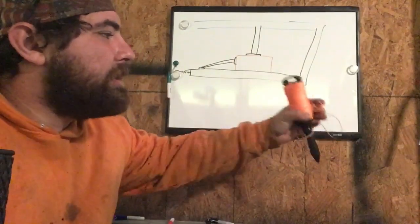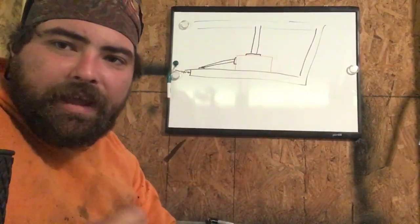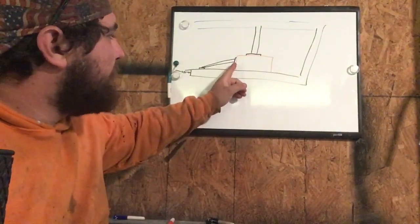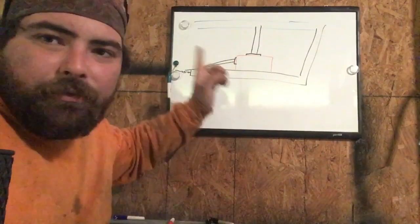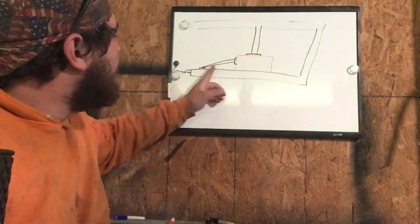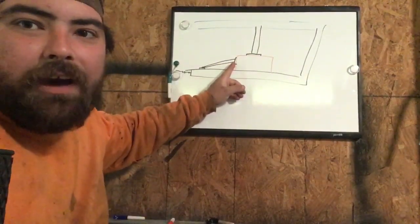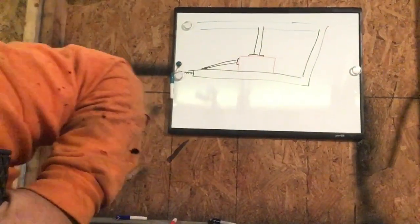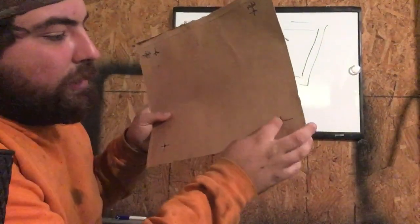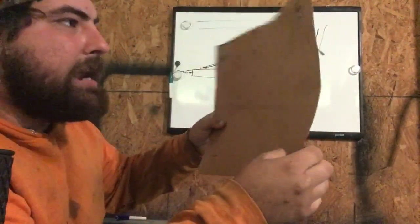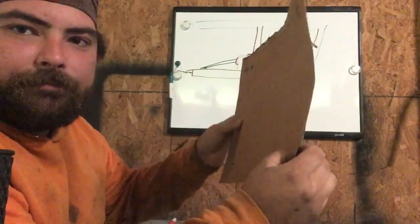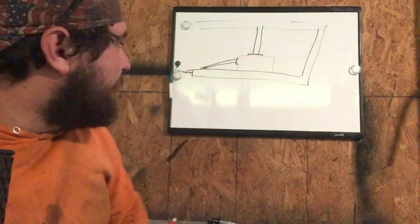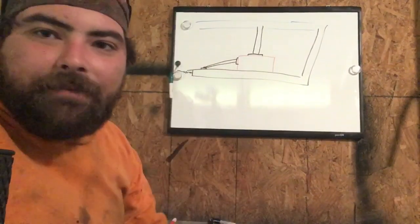So what we do is we tie the string to the bottom inside corner anchor bolt and we take it and we run that string over to the other wall right here. Then we get it level, we measure off of the wall where we want the first bolt to be, mark it, get it level, mark it. Now this bolt level right here and this bolt level right here are now the same level, they're at the same level.